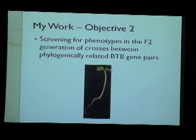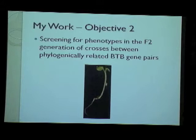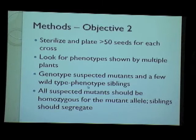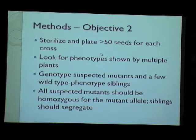Some of the ways we looked for phenotypes included differences in cotyledon size, number, the angle at which cotyledons open, or their pigmentation. We also looked at differences in hypocotyl length or thickness, and differences in root length or even the presence or absence of root. The screening method involved plating more than 50 seeds per cross and looking for phenotypes shown by multiple plants, since we expected a Mendelian segregation ratio of about 1 in 16 in the F2 generation.